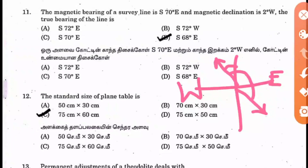They ask for true bearing, which should start from true north — this will be your true north. From the true bearing, 2 degrees has to be subtracted because from true north it is 70 degrees. So the true bearing is South 68 degrees East.